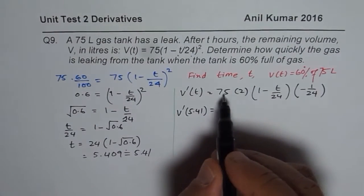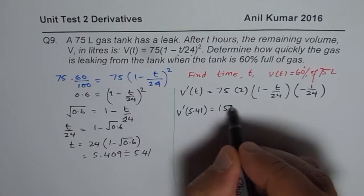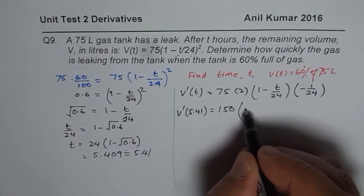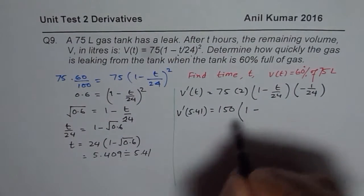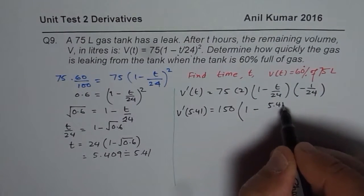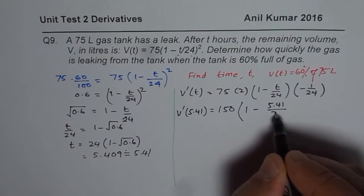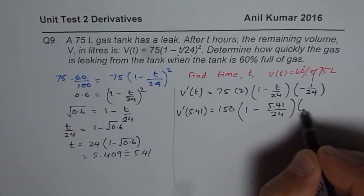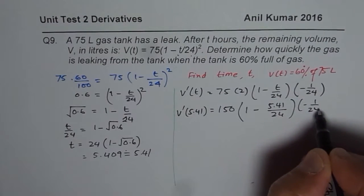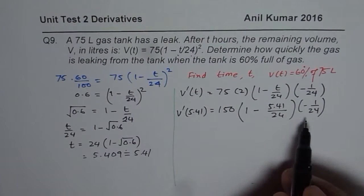What we need to find is rate of change at 5.41. So is equal to 75 times 2 is 150. Let us write down 150 here. 1 minus T is 5.41, 5.41 divided by 24 times minus 1 over 24. So that is the rate of change.